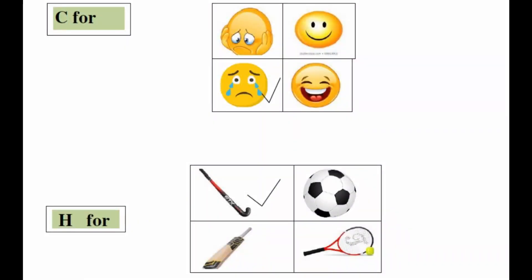Let's take an example, C for. Here pictures are given and children have to match from the four pictures what starts with C. We will match here, C for cry. Cry means to cry or weep. So we will click on this and tick it.